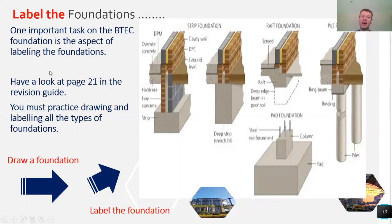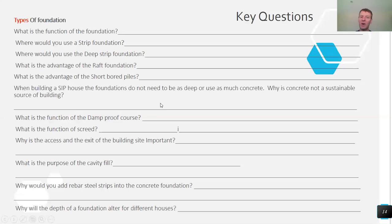Have a go at labelling the types of foundations. It's important that at least one of your GCSE exam questions will always be about sketching and drawing, and you need to be able to draw at least one type of foundation. Once you can draw one, you can pretty much draw them all — including the external wall, internal wall, damp proof course, damp proof membrane, concrete, and strip foundation.